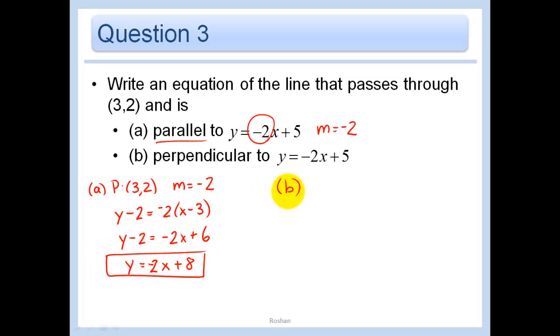Part B. Now we have the same point we're passing through but perpendicular to a certain line. So we have to think about what we know about lines that are perpendicular to one another. Negative reciprocals. Right. So you take the negative and flip it. 2 over 1, flip it and it would be 1 half. So same point, 3, 2. And now m equals 1 half. y minus 2 equals 1 half x minus 3 halves. Add 2 to both sides and we get y equals 1 half x plus 1 half.